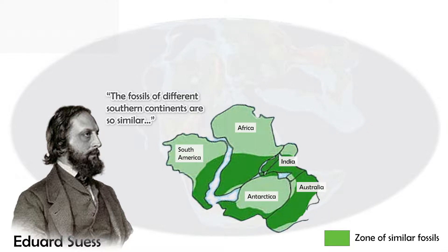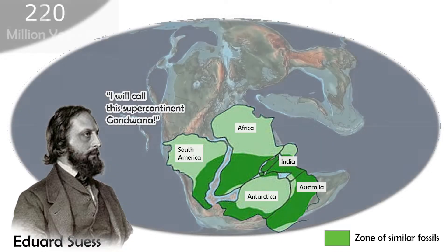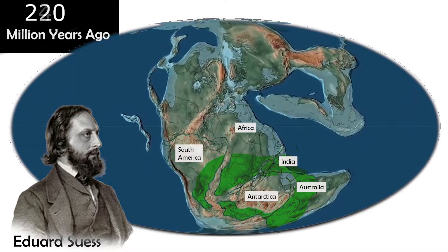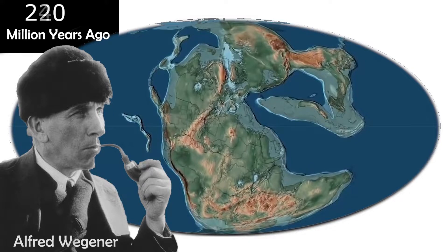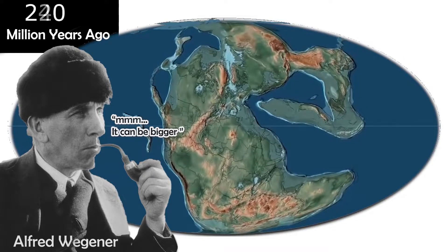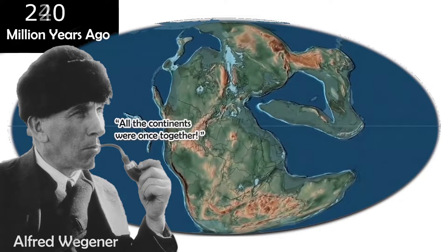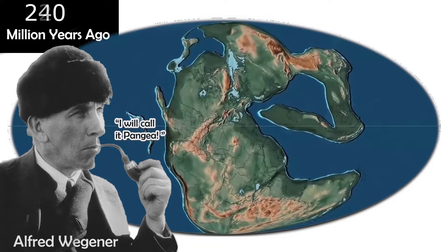He proposed that all of the southern continents — not just Africa and South America, but also Antarctica and Australia and the subcontinent of India — were combined into a supercontinent he called Gondwana, named after the Gondi people of India. At the beginning of the 20th century, a German scientist named Alfred Wegener built on these ideas about supercontinents breaking up to argue that a supercontinent even bigger than Gondwana had existed. He argued that all of the continents were together in a supercontinent called Pangaea, a name that in Greek means all Earth.